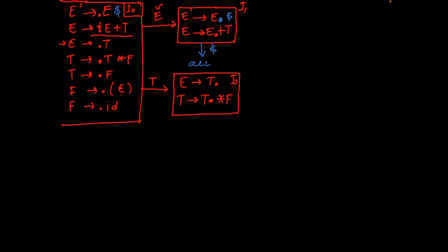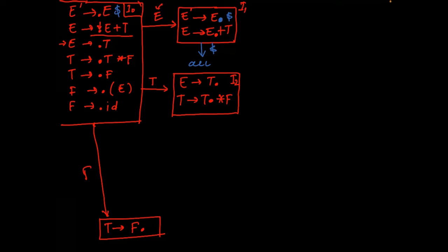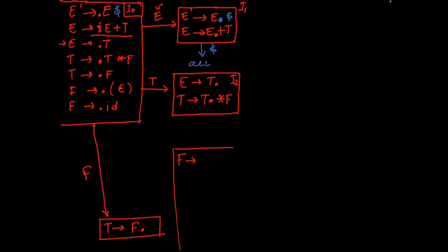Then after the dot, F is appearing. So for F, T to dot F jumps by one step — T to F-dot — and after the dot there is nothing, so we don't need to add anything. Then after dot, opening bracket is there. For this transition, we get I3.